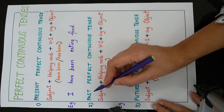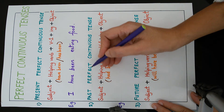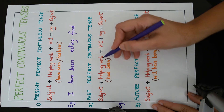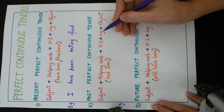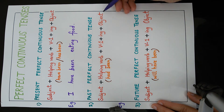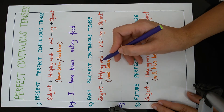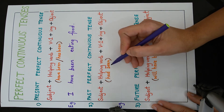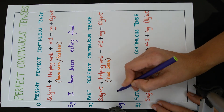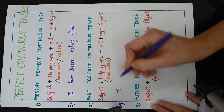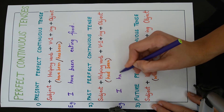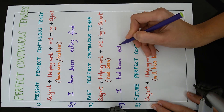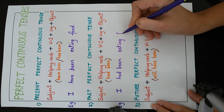The next is past perfect continuous tense. The formula is subject plus helping verb plus V1 plus 'ing' plus object. The helping verb, because it is a past tense, is 'had been'. The sentence is: I had been eating food.